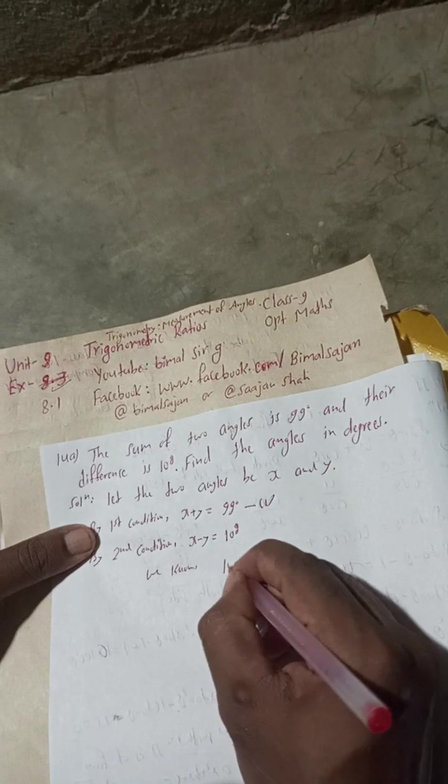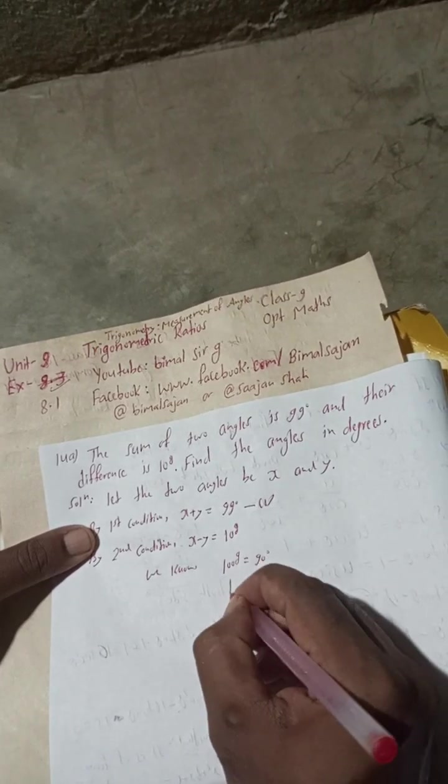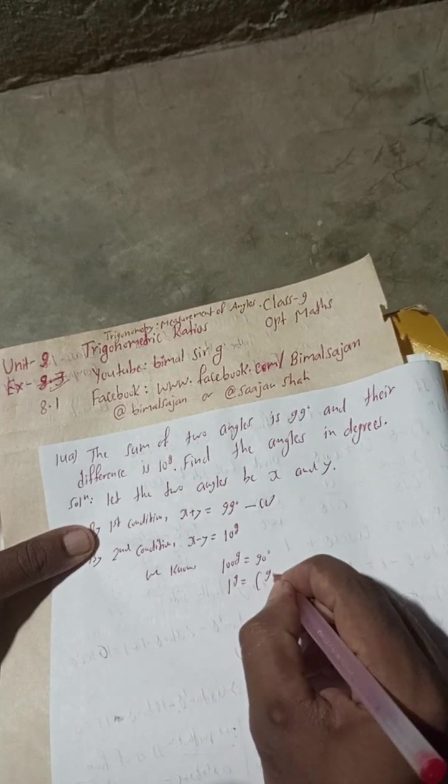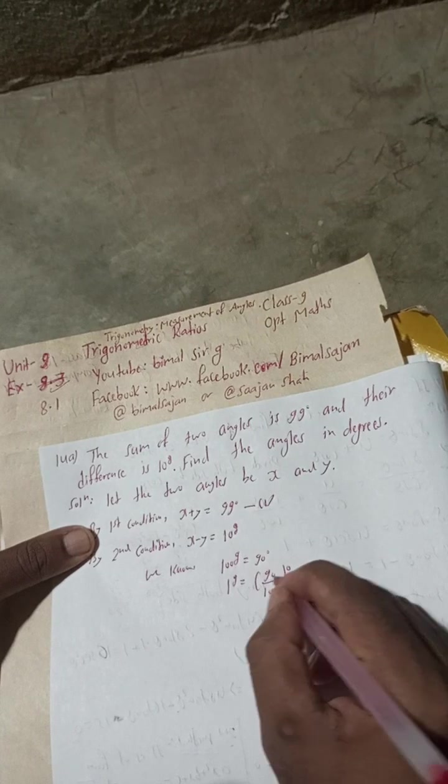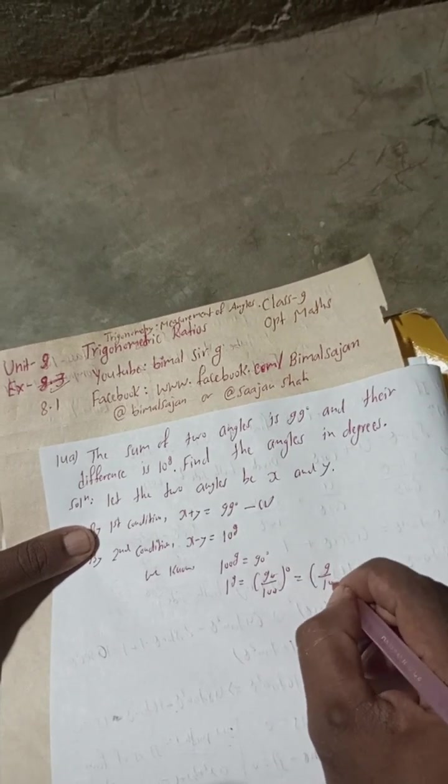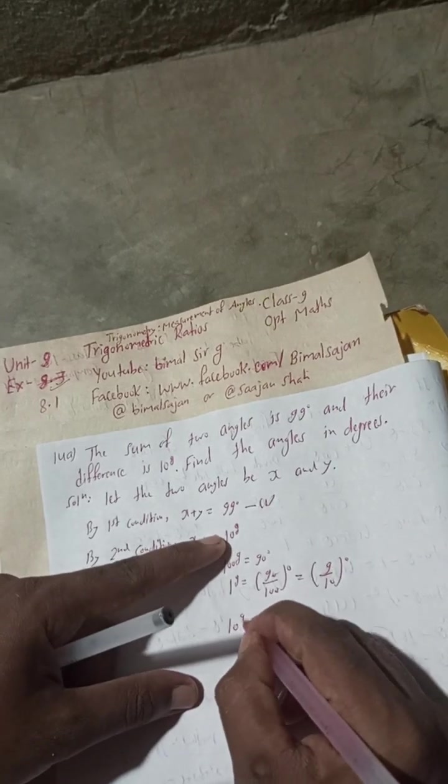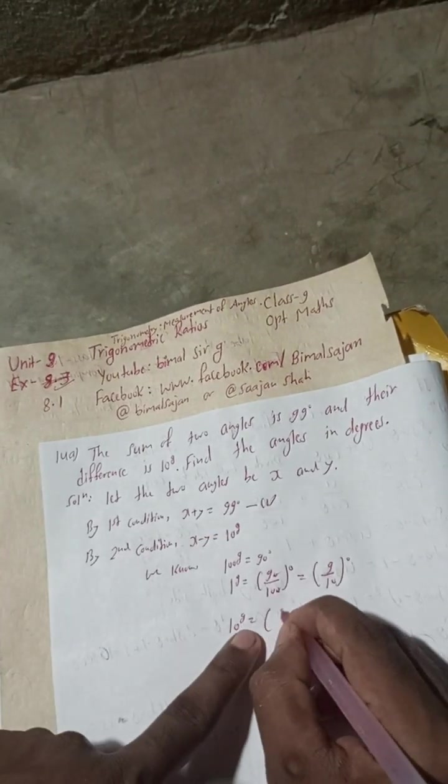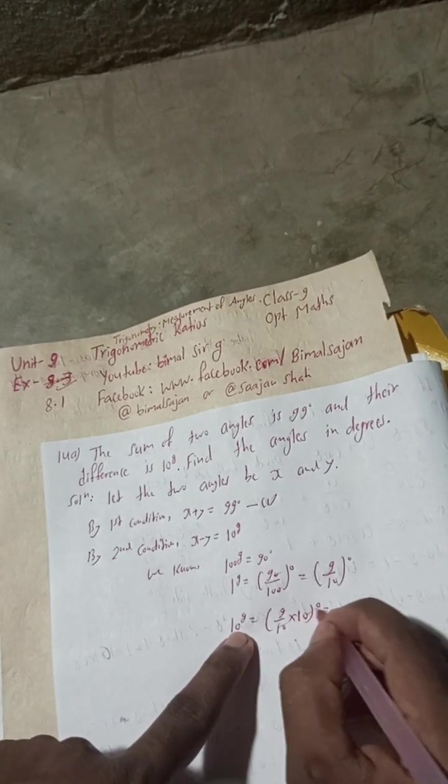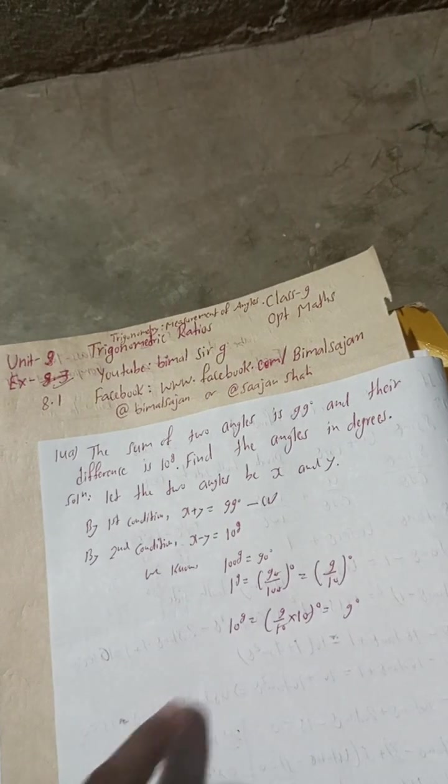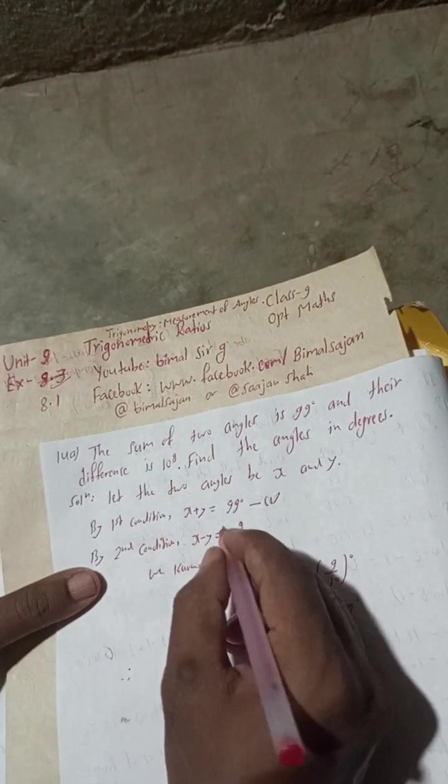We know 100 grade is equal to 90 degree. This implies 1 grade is equal to 90 by 100 degree, that is equal to 9 by 10 degree. So 10 grade is equal to 9 degree.